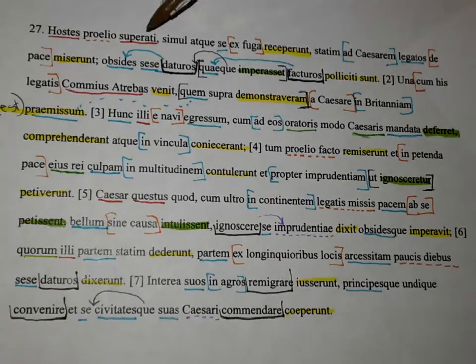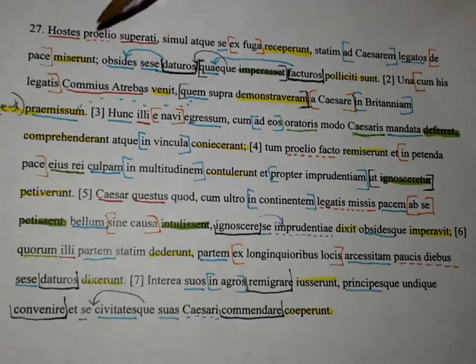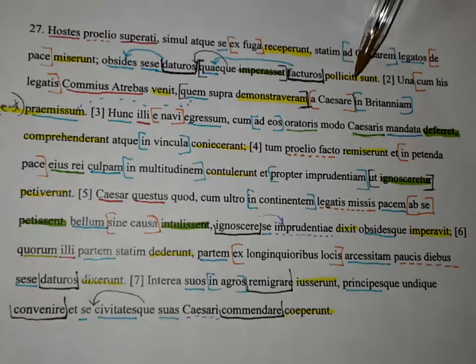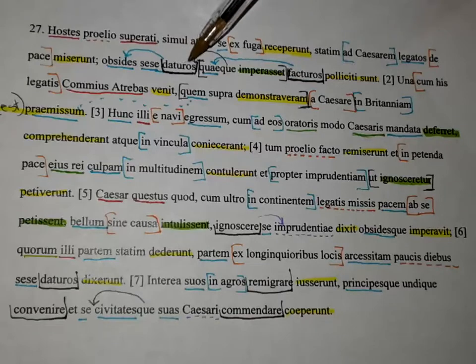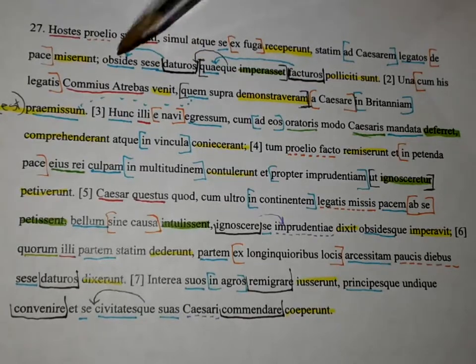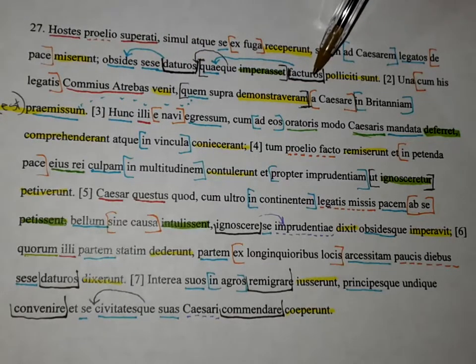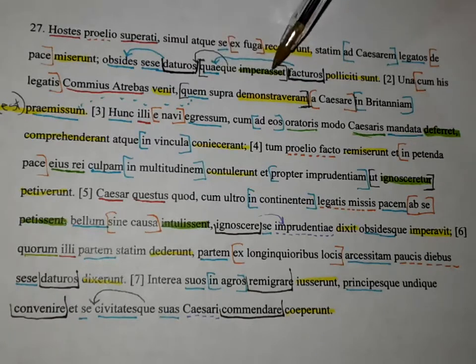The enemies, having been beaten in battle, and also at the same time they recovered themselves from flight, immediately sent ambassadors to Caesar about peace. They promised that they would give hostages and would do that which he had commanded.